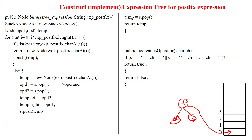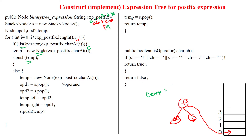Now i is incremented by 1, so i is now 3. Reading the character at position 3, which is 'c'. This is positions 0, 1, 2, 3, 4. Is it an operator? No, it is not an operator. So for 'c', we are creating the node, assigned to temp. Now temp is updated with 'c', then i is incremented again.